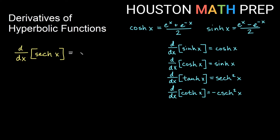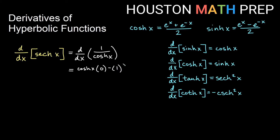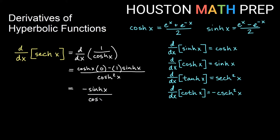Looking at the derivative of hyperbolic secant, we'll do a quotient rule here, thinking of hyperbolic secant as 1 over cosh of x. Using the quotient rule: the low function times the derivative of the high function — derivative of 1 is 0 — minus the high function times the derivative of the low function; derivative of cosh x is sinh x; all over the square of what's on the bottom, which gives us cosh squared x. The first term, cosh x times 0, is nothing. I get negative 1 times sinh x, so negative sinh x on top, and cosh squared x on the bottom.